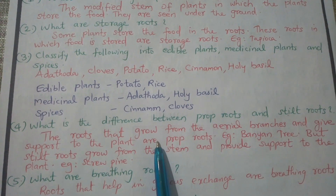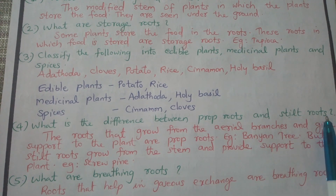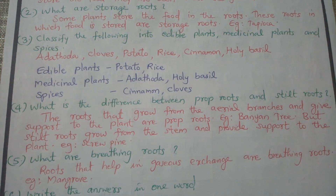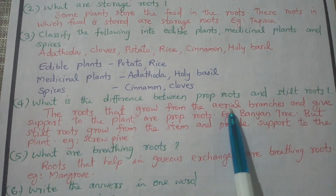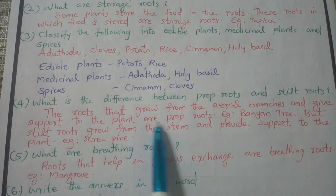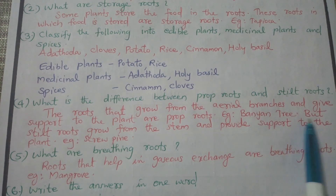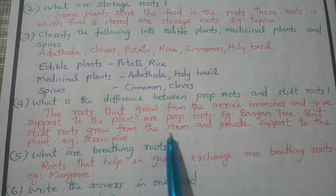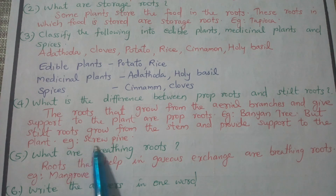Question number 4: What is the difference between prop roots and stilt roots? The roots that grow from the aerial branches and give support to the plant are prop roots — for example, the banyan tree. Stilt roots grow from the stem and provide support to the plant — for example, screw pine.